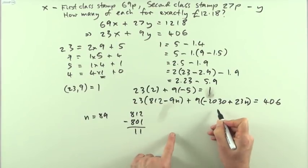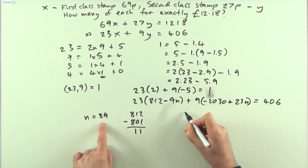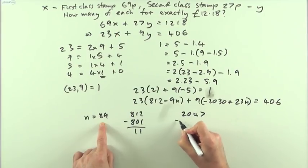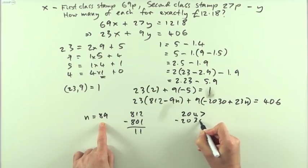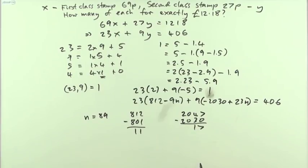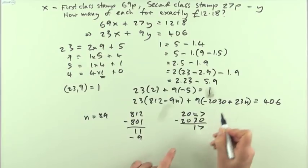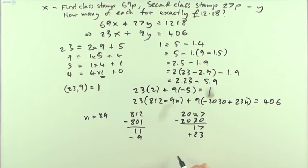And that's going to be the 23 times 89, which is 2047. Take away the 2030, which is 17 for one solution, and then you just do it again. There's room to take away another 9, so that means there's room to add another 23, which gives me 2 and 40 as a second solution.